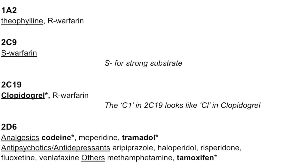Then we have 2C19 — remember it's clopidogrel, or Plavix. The way I remember it's the 2C19 enzyme is that 'C1' in 2C19 looks a whole lot like 'CL' in clopidogrel. Moving on, the 2D6 enzyme — mostly pain meds and antipsychotics. There are also some prodrugs in here like codeine and tamoxifen. On this page, I highlighted the prodrugs: clopidogrel, codeine, tramadol, and tamoxifen.